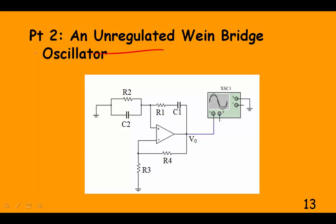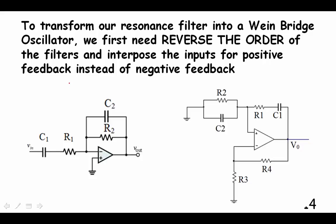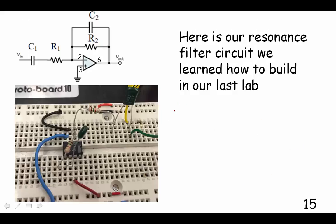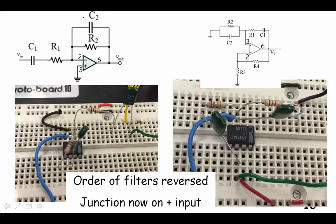Here is an unregulated wine bridge oscillator that we're going to build first. If we compare our band pass filter, which has been turned into a resonance filter by making those capacitors the same and the resistors the same, that is our resonance filter. We're going to turn that into the wine bridge oscillator. On the input we have a series RC circuit, and over the feedback loop, a negative feedback loop, we have a parallel RC circuit.